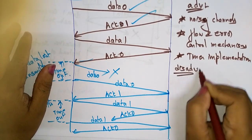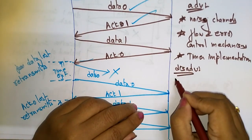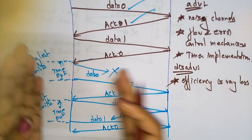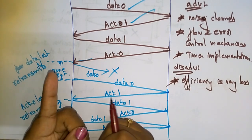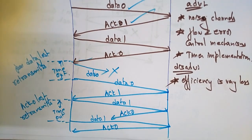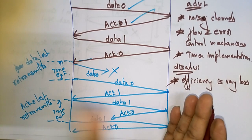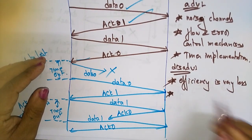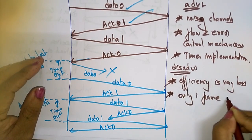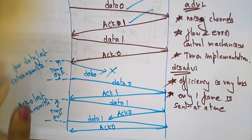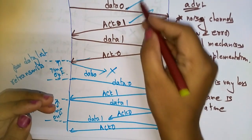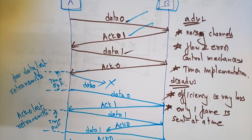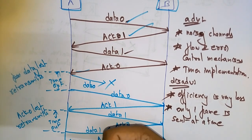The disadvantages of Stop-and-Wait ARQ are: efficiency is very less, because the sender can send only one data packet at a time — there is no concept of sending all packets at once, so until it receives the acknowledgement it sends the same packet. Only one frame is sent at a time, and the timer has to be set for each individual frame. To overcome these disadvantages of Stop-and-Wait ARQ, we go for the Sliding Window Protocol.